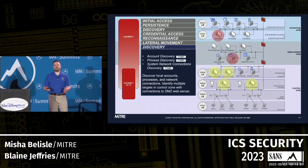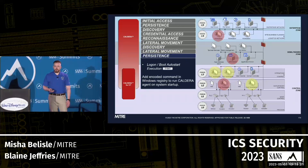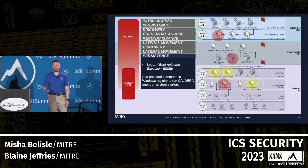Since we're now into the DMZ, we'll discover more assets at the L3, L2, and L1 layers of the Purdue model. Then we can transfer our payload — maybe using native remote services like RDP — into the Control Zone and establish persistence. But all this shouldn't be very new; Caldera core already has this functionality built in. It's free, open source, and you can download and set it up really quickly.